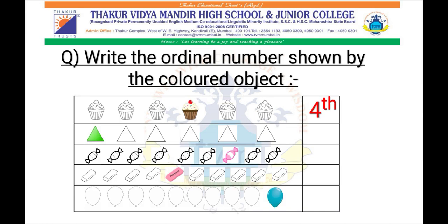Now let's write the ordinal number shown by the colored object. Let's see for the first row: 1st, 2nd, 3rd, and 4th. The 4th muffin is colored in the row, so we have written the ordinal number 4th in the column. The same way you finish the rest.